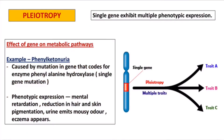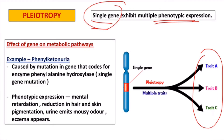Now let's see about pleiotropy. In all the characters we have seen, one character is controlled by one gene. But in pleiotropy, a single gene shows multiple phenotypic expressions — meaning a defect in this single gene affects three or more different characters simultaneously.